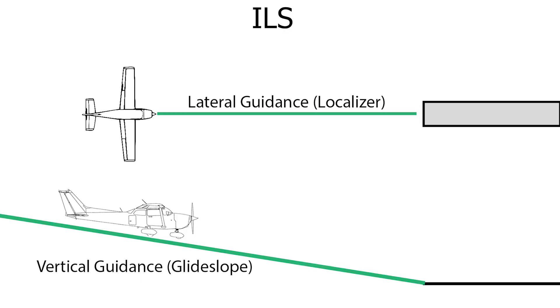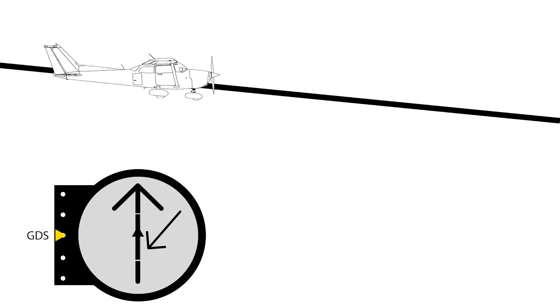If the aircraft is above the glide path, then the glide slope pointer will be below the center of the indicator. The further away the glide slope pointer is from the center represents how far the aircraft is from the glide path. Both the localizer and glide slope are combined to make an ILS. So if you keep the CDI in the center, for most airports you will be lined up with the runway, and if the glide slope indicator is in the middle, that means you are on the glide path.